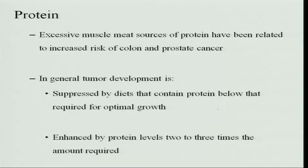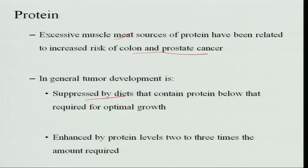Regarding protein, excessive muscle meat sources of protein have been related to increased colon and prostate cancer. Protein in the recommended amount is fine, but excess protein increases the risk of colon and prostate cancer. Tumor development is suppressed by diets containing protein at or below the optimal growth requirement, combining plant and animal proteins. If protein is consumed at 2 to 3 times the recommended amount, cancer enhancement occurs.